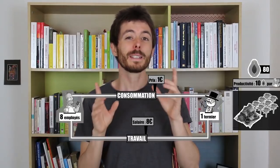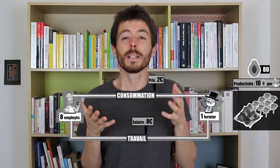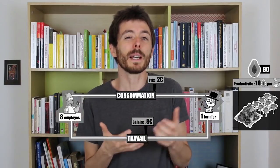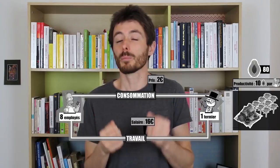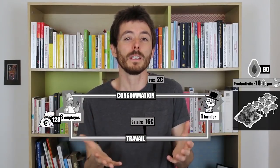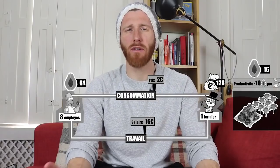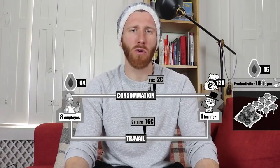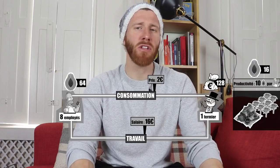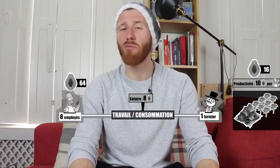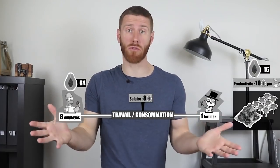Getting rid of money lets us understand precisely what happens in the real economy without being obscured by monetary transactions. Money is ultimately just a medium of exchange — what really counts is what we exchange with it. For example, if papaya prices doubled from €1 to €2 and salaries also doubled from €8 to €16, there would be no difference. Employees could still consume 8 papayas each, and the farmer would still have his 16 papayas of profit. Money troubles the reasoning more than anything else.